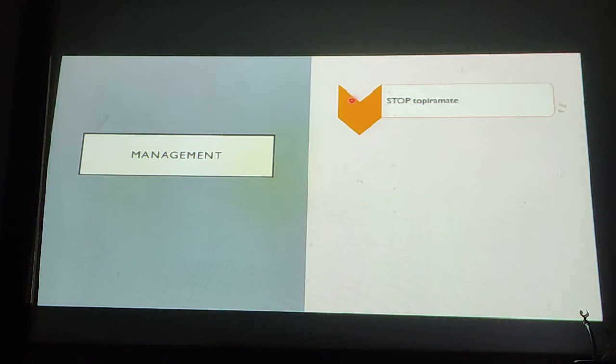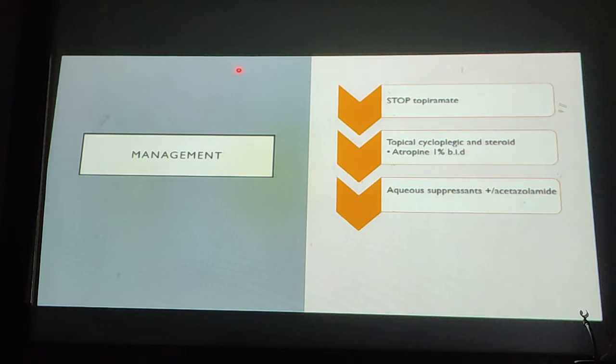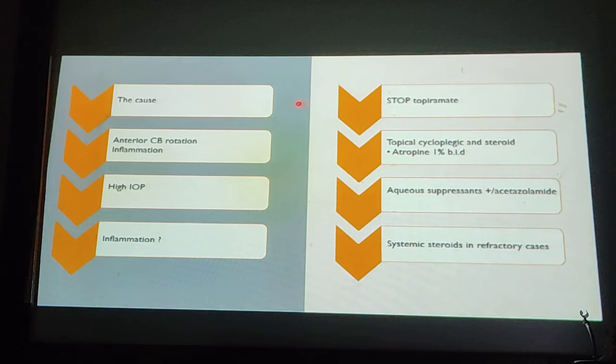Again, visiting our management: stop topiramate, use topical cycloplegics and steroids such as atropine 1% twice daily, use aqueous suppressants plus or minus acetazolamide, and give systemic steroids if it's refractory. So let's go into more details. First of all, stop the drug, stop the topiramate.